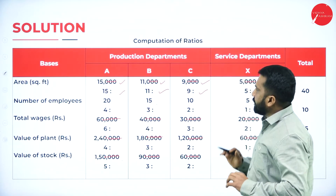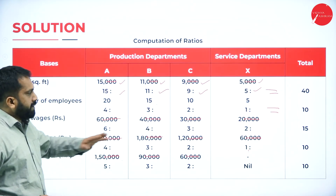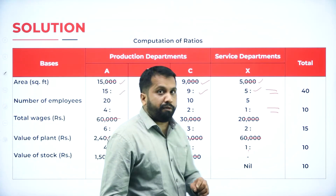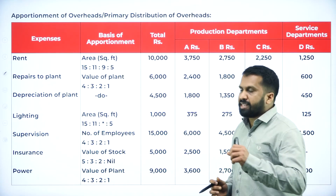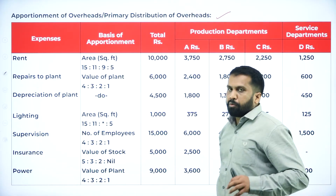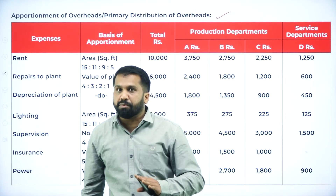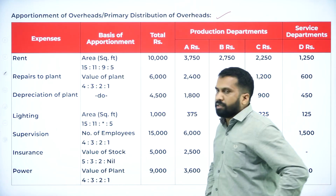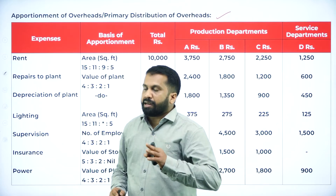We have done with all these calculations. Once you are done with the working note, you have to go for the real answer. The heading is: Apportionment of Overhead — Primary Distribution of Overhead. What you are doing now is only primary distribution, not secondary distribution. As per this, you have to write all the expenses given in the question.